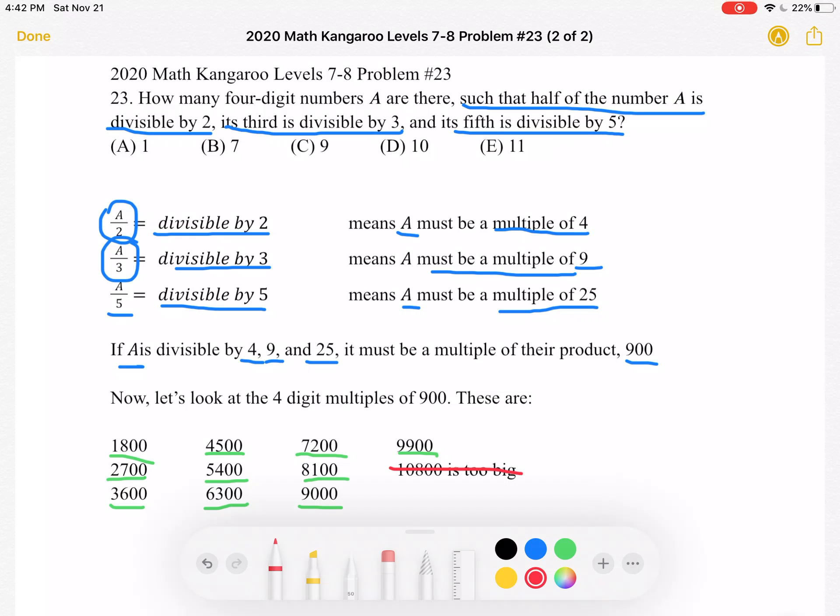So all we have to do right now is count them up. Well, we can see that we have 3, 3, 3, plus 1. We have a total of 10 numbers. This is answer choice D. Thank you so much for watching, and please subscribe if you'd like to see more videos.